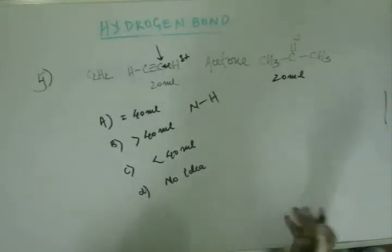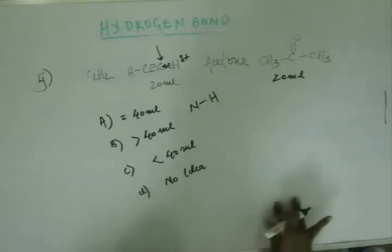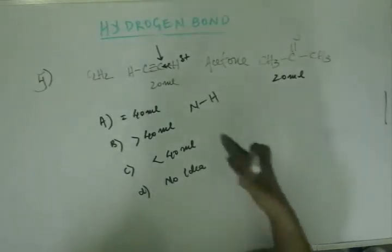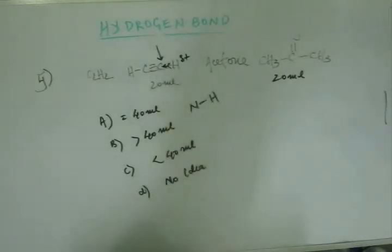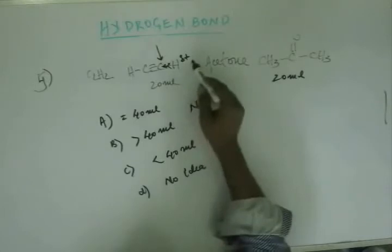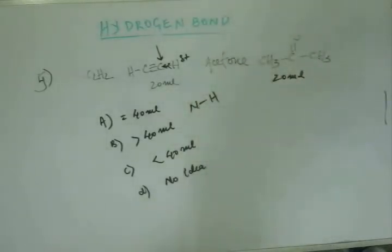That means the plus charge on this hydrogen will be more than what is there on hydrogen in ammonia. Because sp hybridized carbon becomes more electronegative than nitrogen, because as percentage s character increases, electronegativity increases.